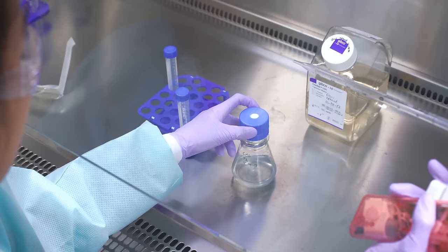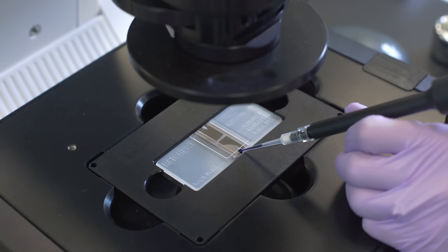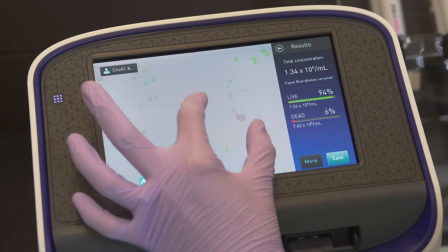When passaging suspension cells, you'll begin by removing a small sample from the cell culture flask for counting. You'll follow the same counting procedure for adherent cells using Trypan blue and either a hemocytometer or the Countess automated cell counter.